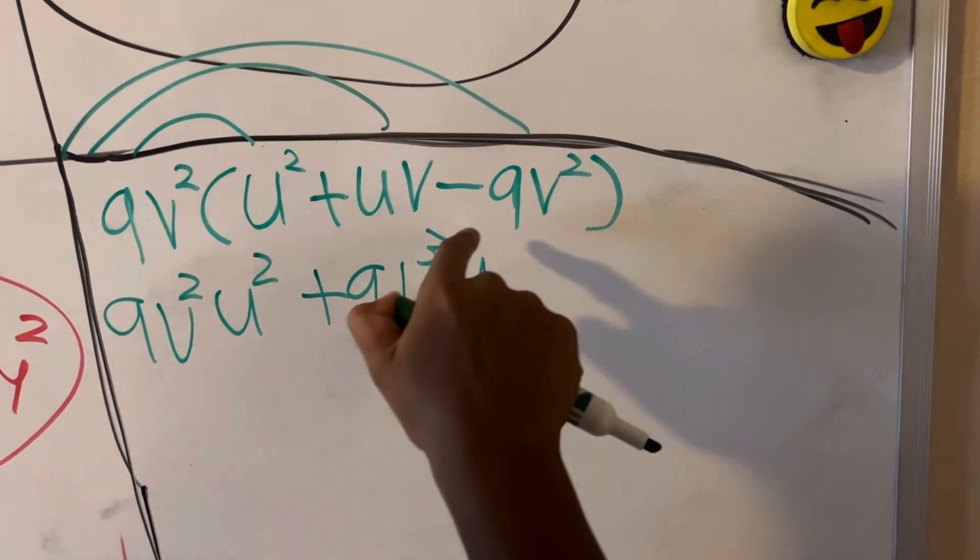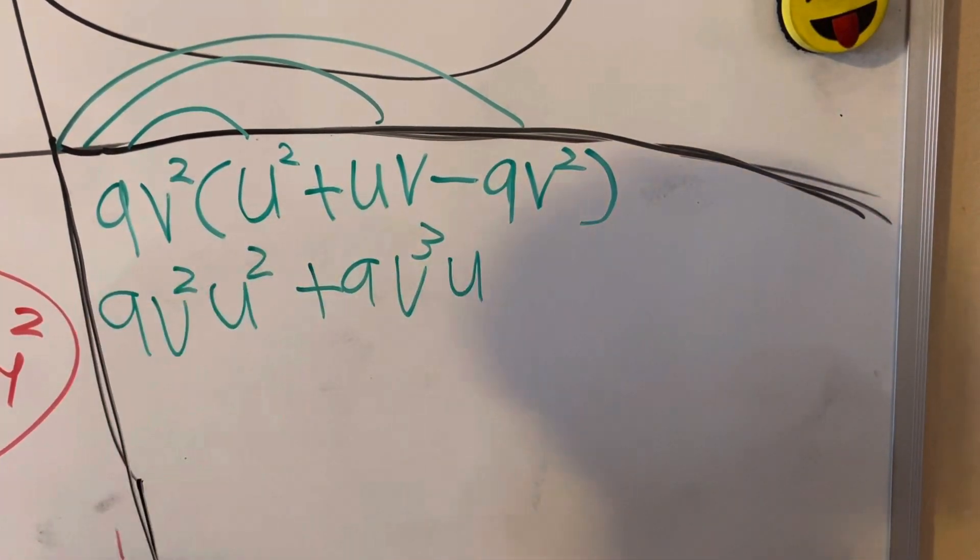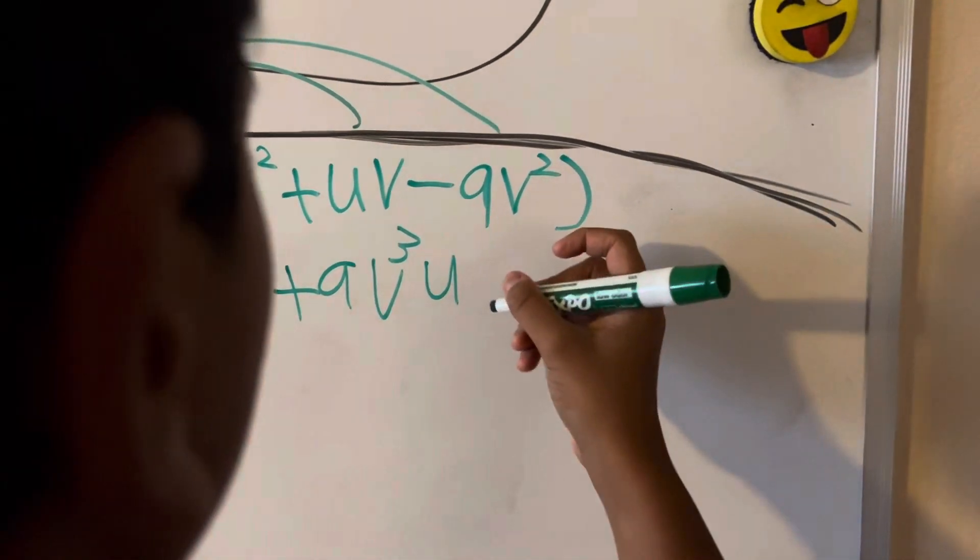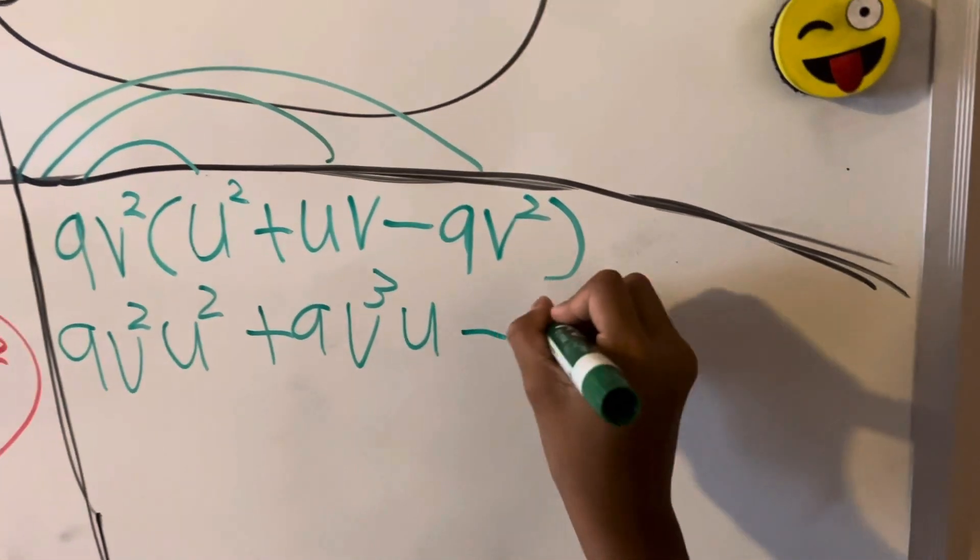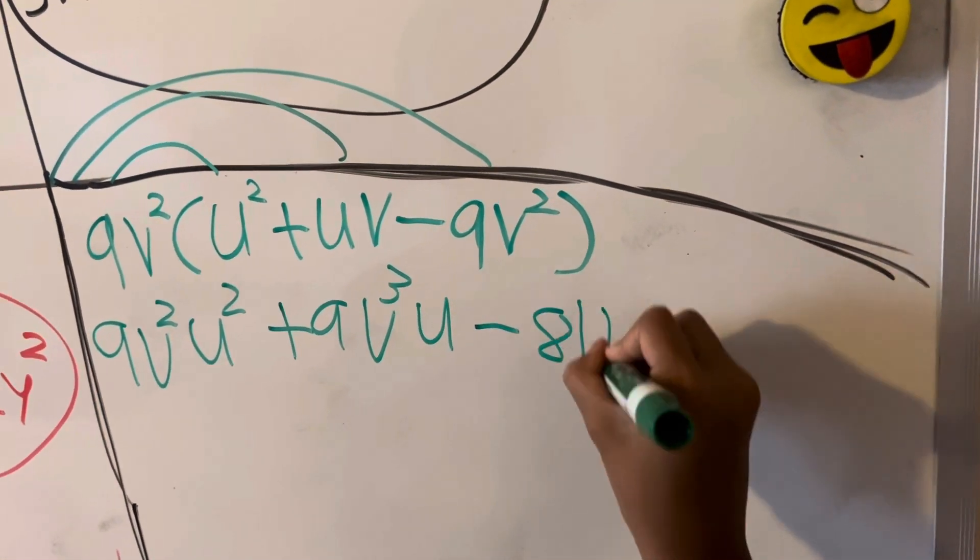Now, negative 9v squared times 9v squared is minus 81v to the fourth.